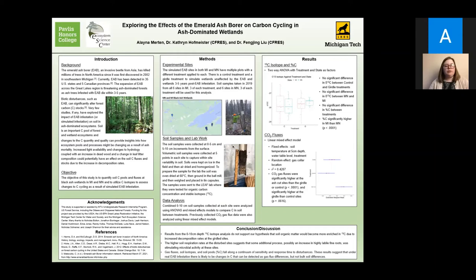For the CO2 fluxes, the optimal linear mixed effects model used soil temperature at 5 centimeters, water table level, and treatment type as its fixed effects, and as its random effect the location of the gas collar, so where the measurements were being taken within the site. With this model we did find that CO2 fluxes were significantly higher at the ash cut sites than the girdle and control sites, and also significantly higher at the girdle than at the control sites.